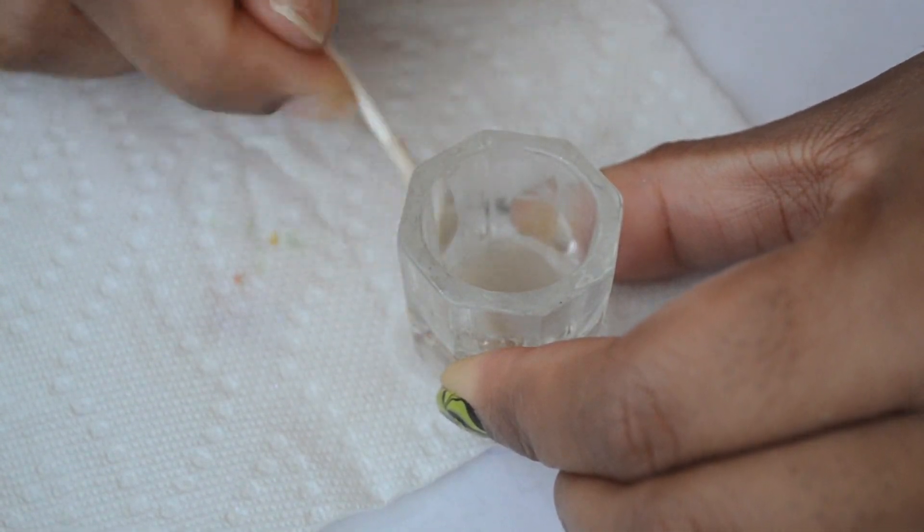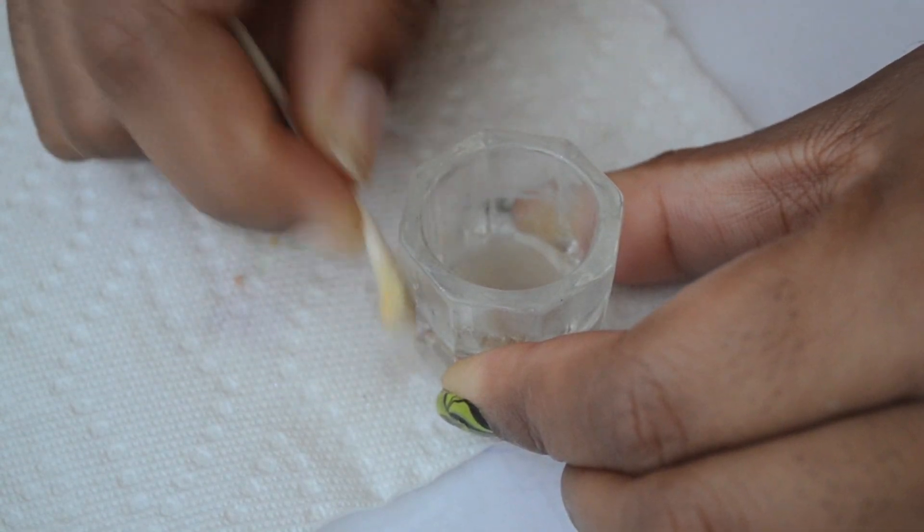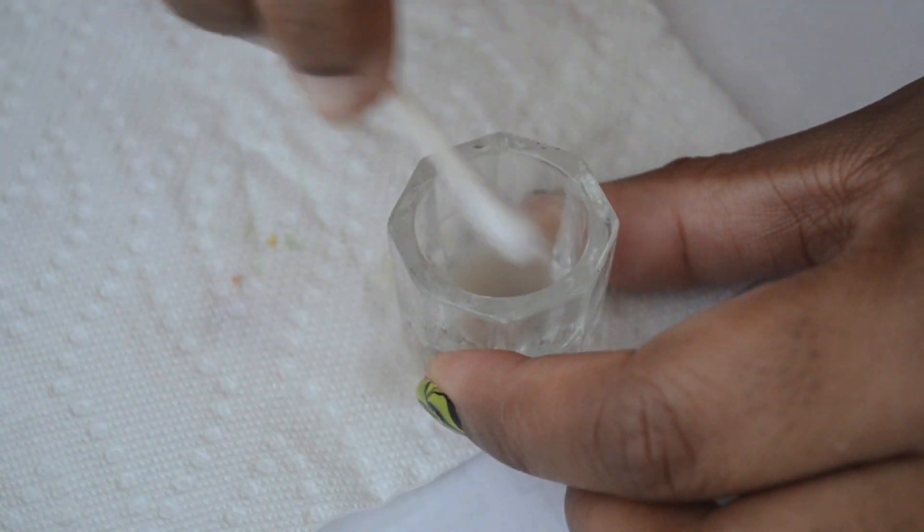Once I get all the polish off, I take the paper towel and remove all the nail polish remover from the dish. Then I wipe the whole thing down so that it's dry.